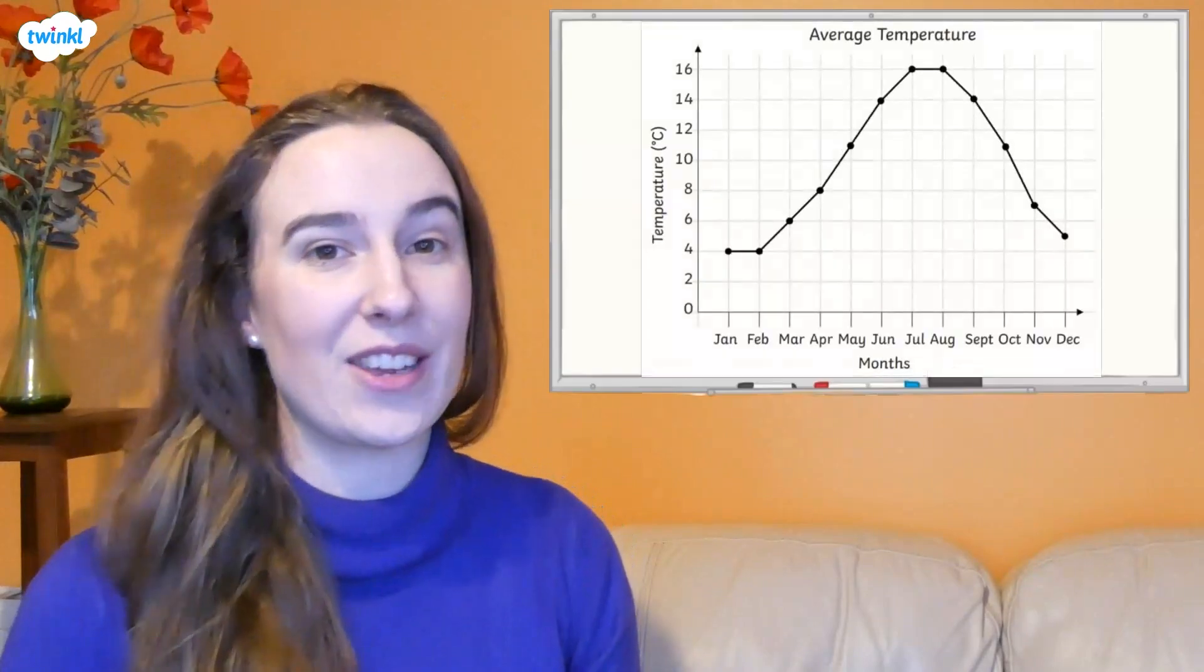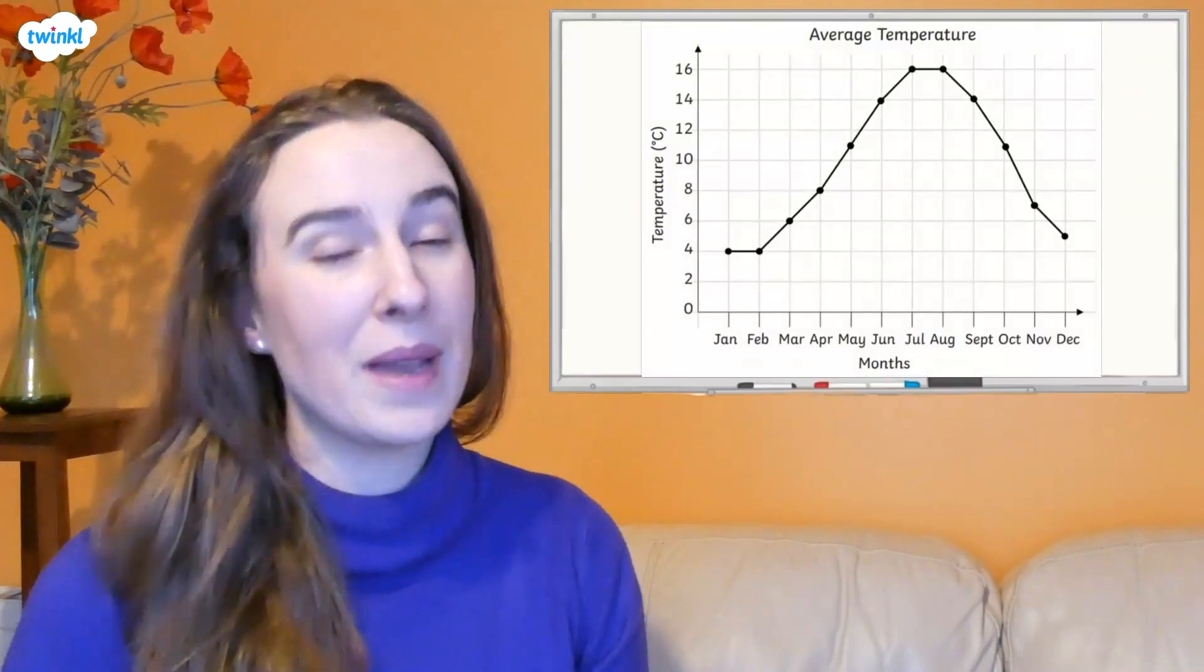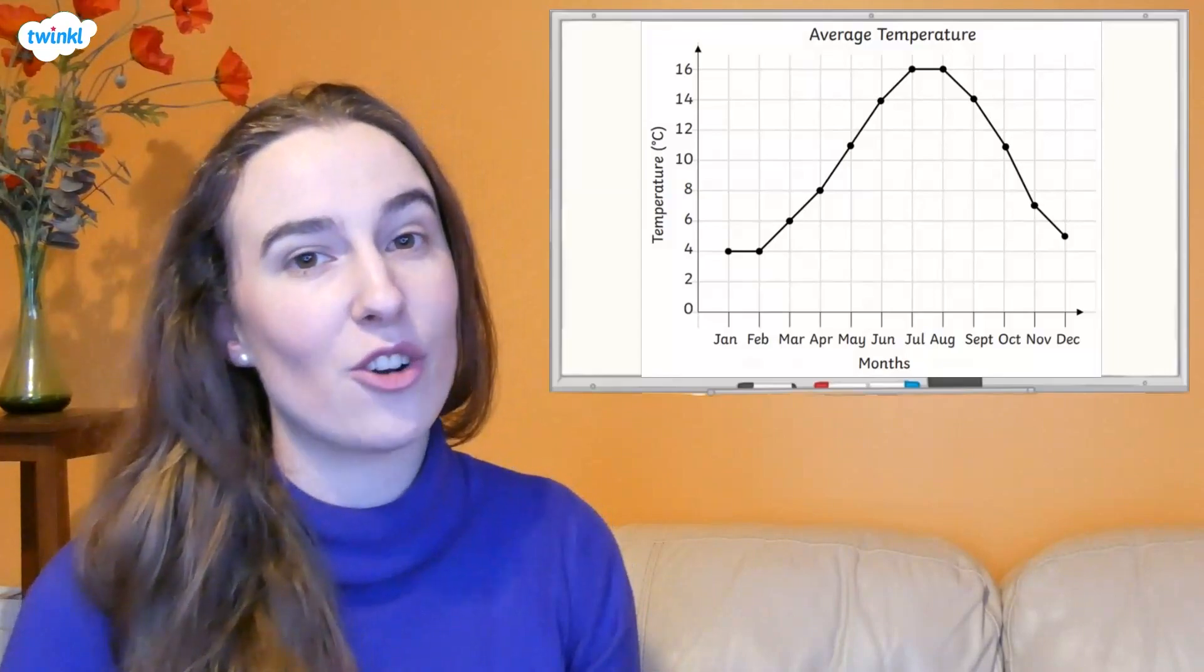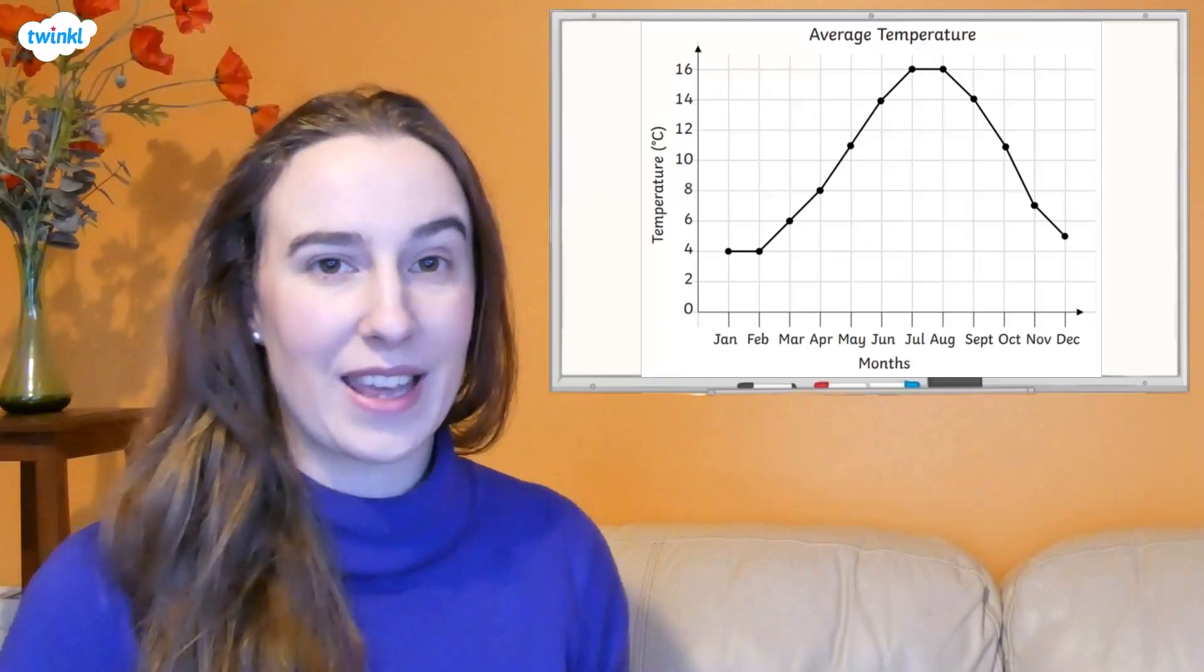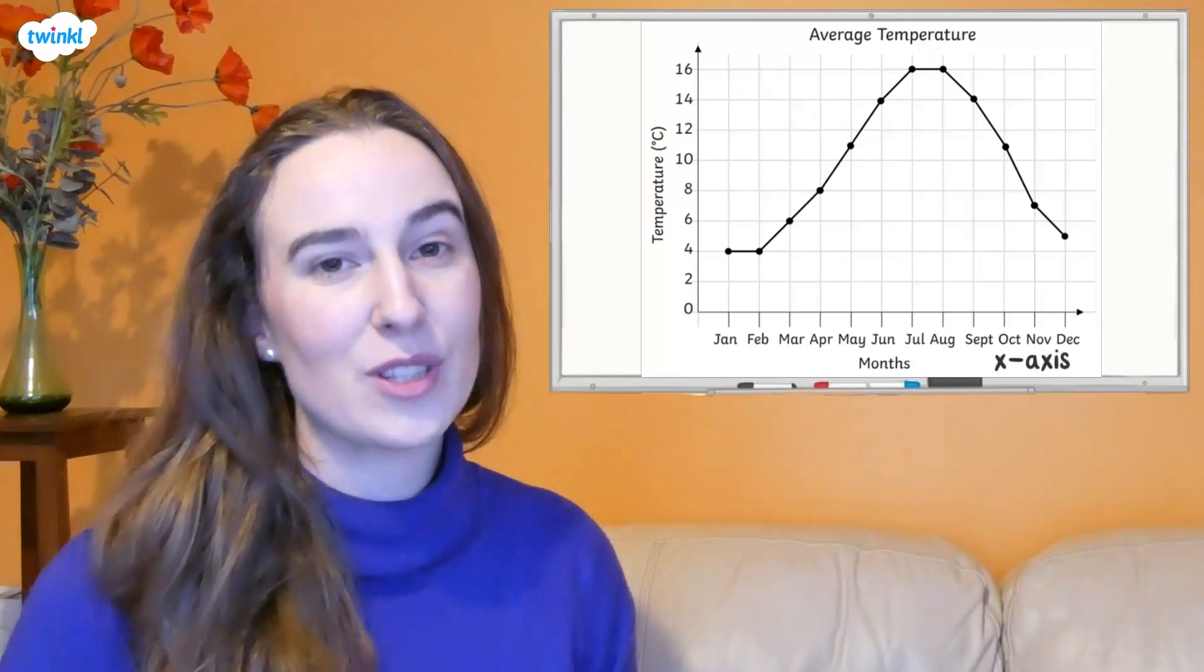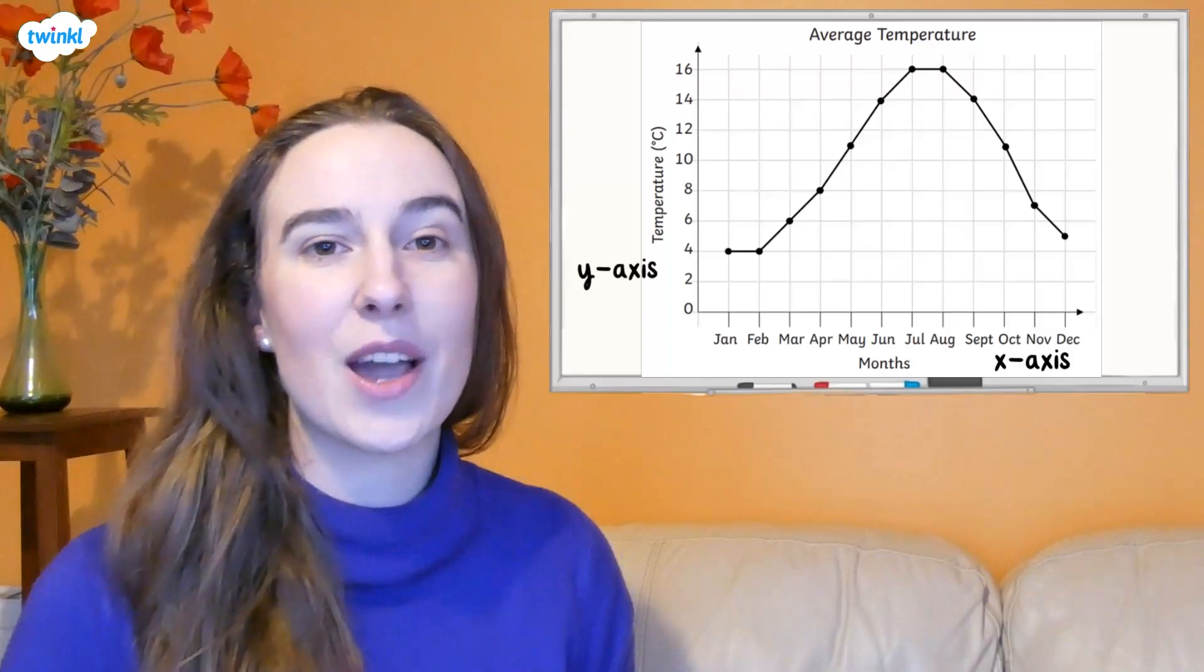This is an example of a line graph that shows the average temperature of a place over a year. You might notice that the months of the year are along the bottom and the temperature is up the side. We call these the axes of the line graph. The x-axis runs horizontally along the bottom and the y-axis runs vertically up the side.